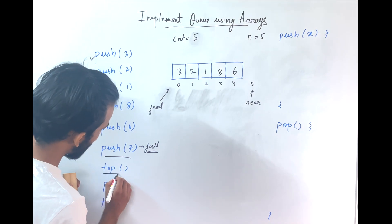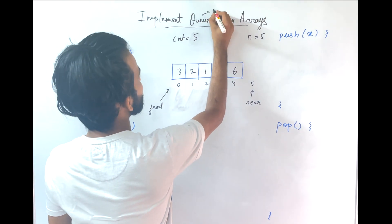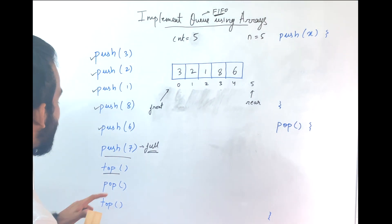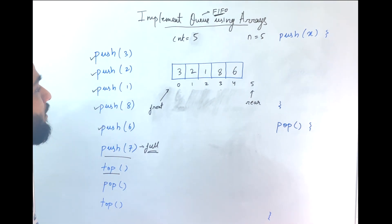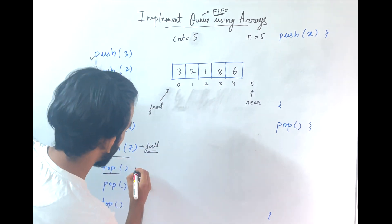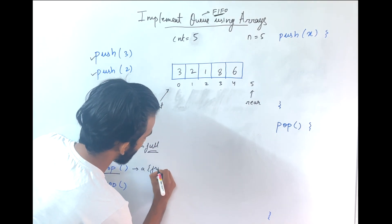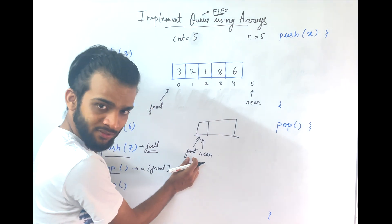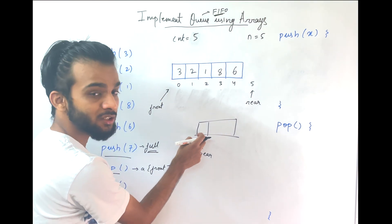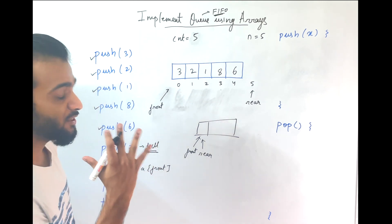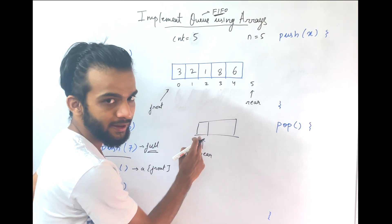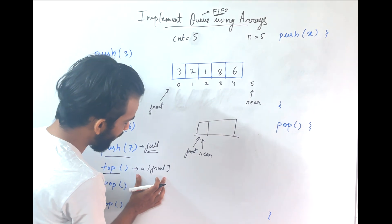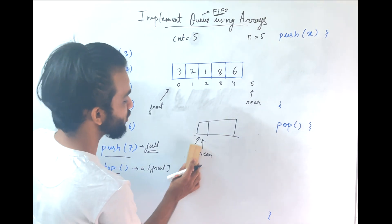If we are asked for the top element — since the queue is first in, first out — the first inserted element was 3. So wherever the front pointer is pointing, that will always be your top element. There is an edge case: make sure the front and rear are not pointing to the same index. If they are, the queue is empty. Only if they are not the same, return a[front].